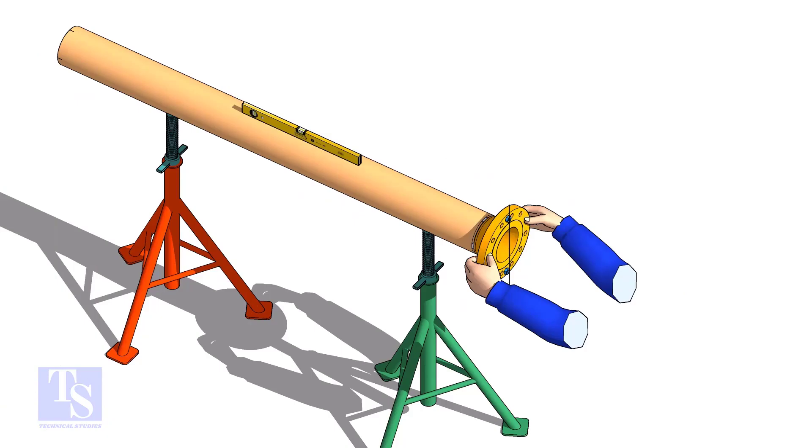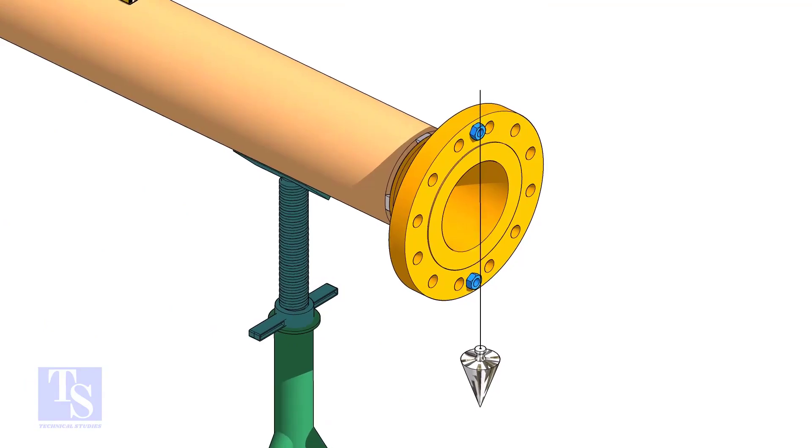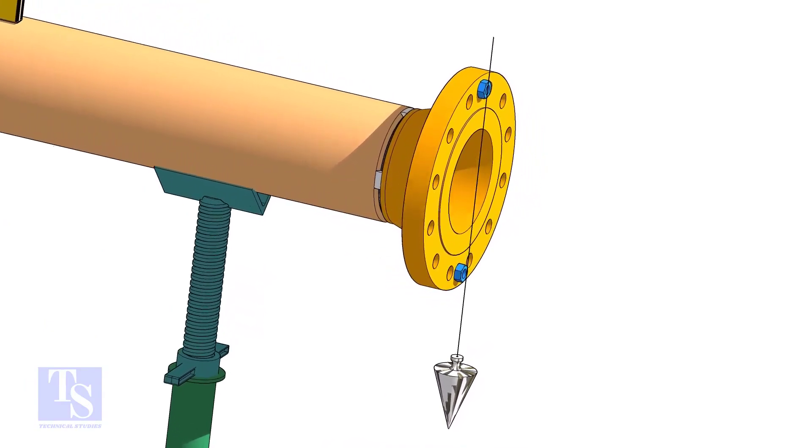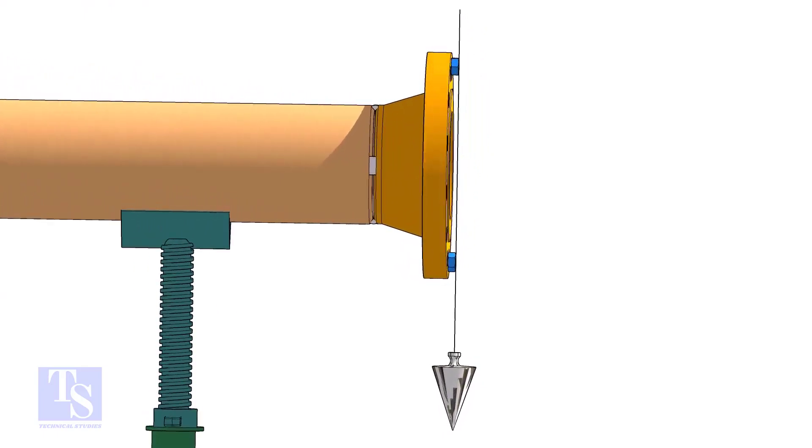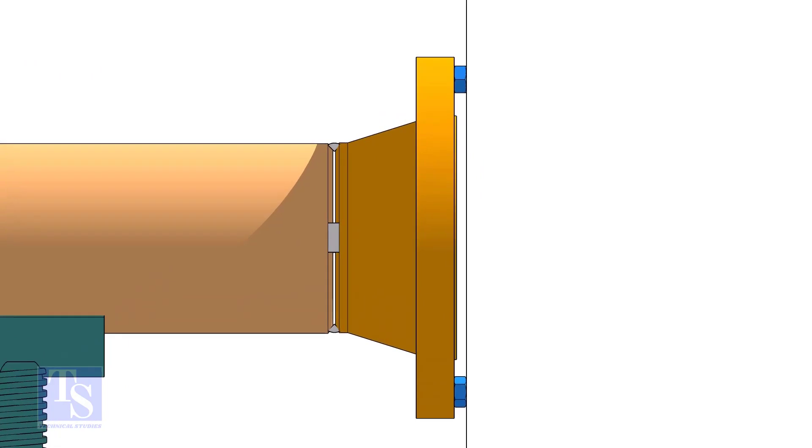In this method, let us learn how to fit up a flange with a pipe using a plumb. Level the pipe, put a plumb through the center of the flange on a nut. Use another nut of the same size to measure the gap between the flange face and the lined thread of the plumb.